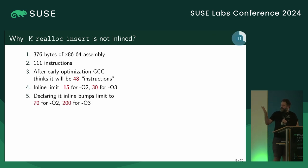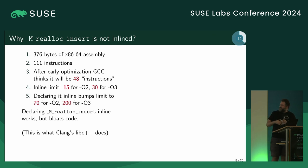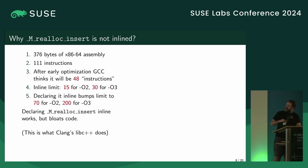One thing would be to declare this function inline, which would get it inlined because the limits are much bigger, but that would increase code size noticeably — making every push 300 bytes long. This is also what happens in the Clang library; it actually uses the inline specifier.